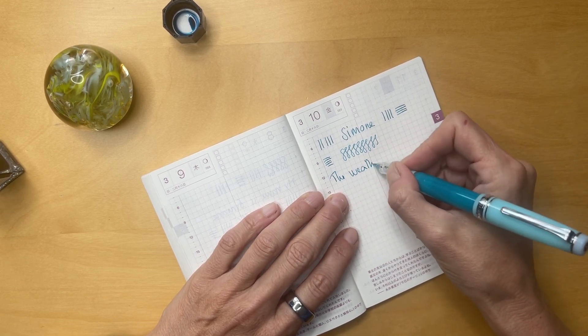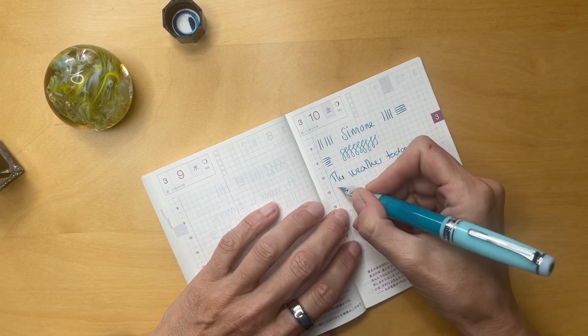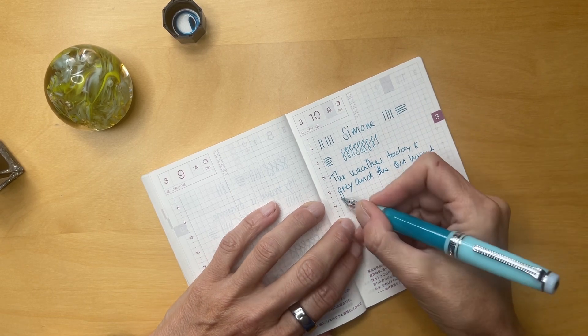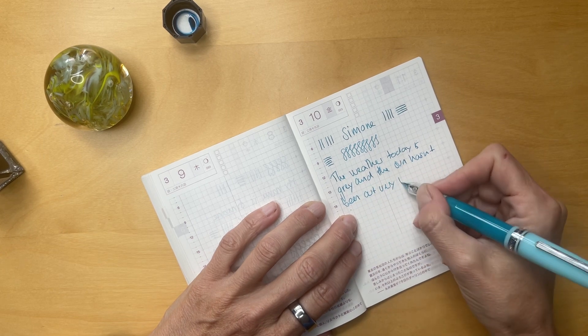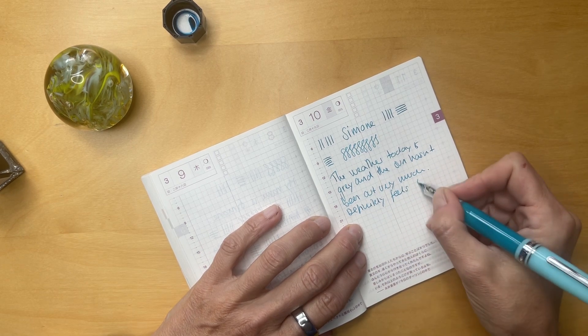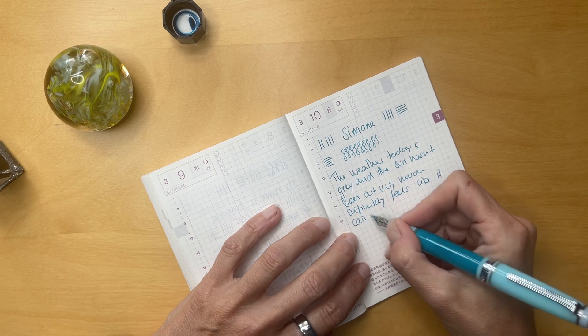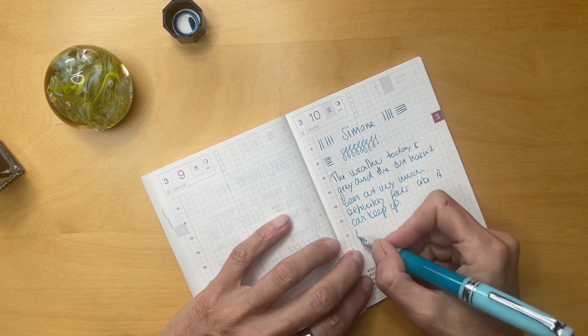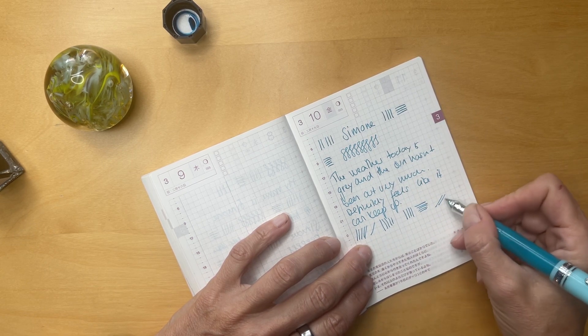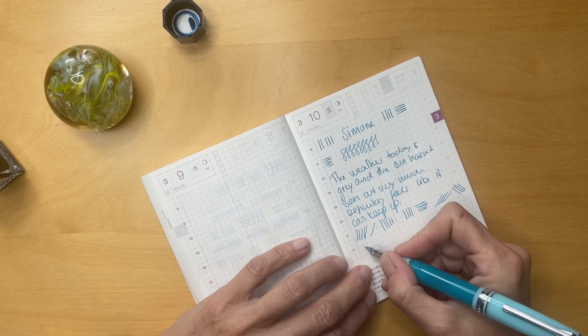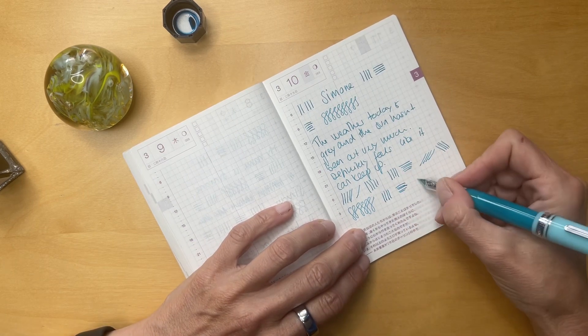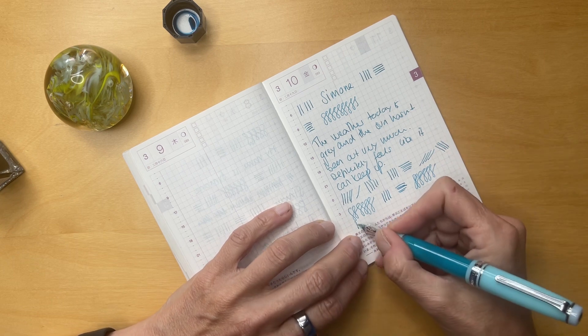Let me see how it works with some faster writing. The weather today, oh my God, is gray and the sun hasn't been out. Sorry, this is so random. Very much. Definitely feels like it can keep up. Again, very, very nice. You can see down strokes, side strokes. It's all the same. It's just a medium nib. You can hear the feedback, but it's very, very nice. And now you can see the colors coming through, so the feed's starting to be saturated.